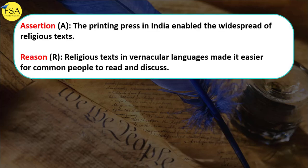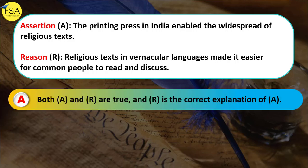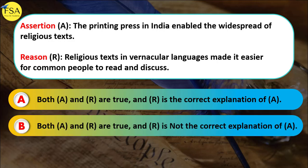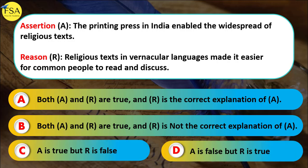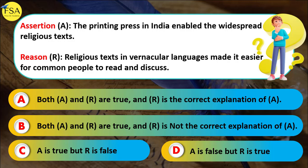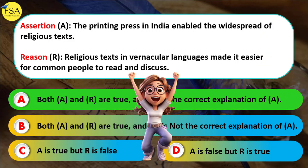Question 2 is an assertion and reason based question. The assertion states that the printing press in India enabled the widespread distribution of religious texts. The reason states that religious texts in vernacular languages made it easier for common people to read and discuss. Both A and R are true and R is the correct explanation of A — Option A is the answer.